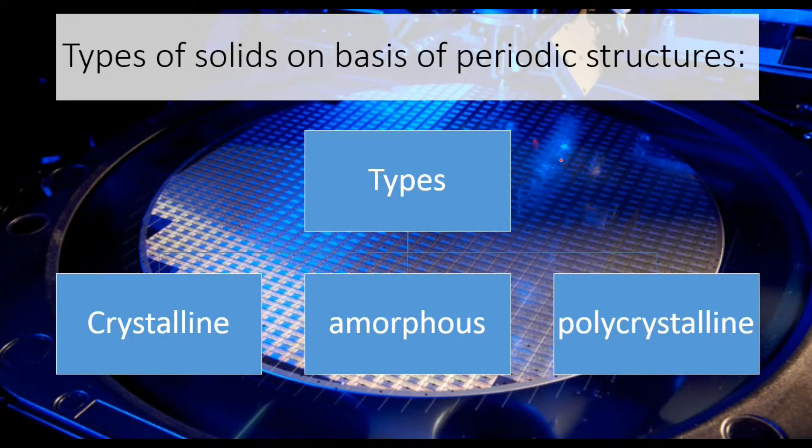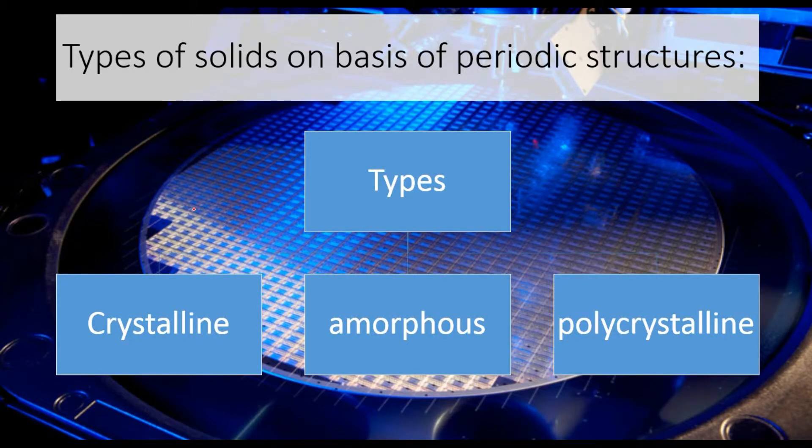In previous lectures we differentiated types of solids on different bases. Today we're going to differentiate types of solids on the basis of their periodic structures, that is on the basis of their lattice. We can differentiate as crystalline, amorphous, and polycrystalline. Let's discuss one by one what is crystalline structure, what is amorphous structure, and what is polycrystalline structure.